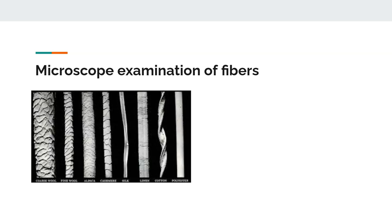Silk is another animal fiber made from silkworms. Linen shows its characteristic perpendicular mark. Cotton shows its ribbon structure. Polyester, a synthetic fiber, appears very regular and uniform all the way along its length.